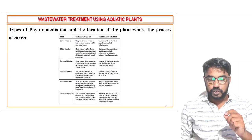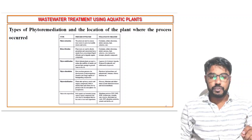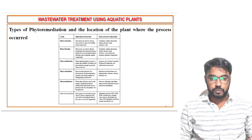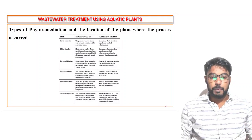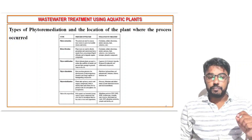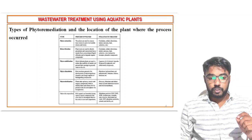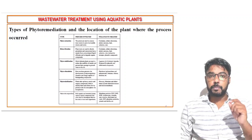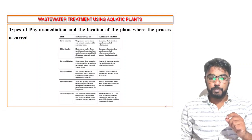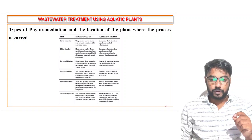In rhizofiltration, cadmium, cobalt, chromium, nickel, mercury, lead, selenium, zinc, radioactive isotopes, and phenolic compounds are concentrated. Another method of phytoremediation is phytostabilization, where metal-tolerant plants are used to reduce the mobility of metals and prevent their passage to groundwater or the air. In phytostabilization, phenolic and chlorinated compounds are among the pollutants treated.